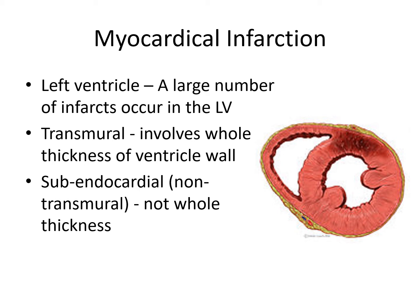In a transmural myocardial infarction, the necrotic tissue involves the whole thickness of the ventricular wall—in this case, the left ventricle, where most infarcts occur. A subendocardial MI would not go through the entire thickness of the ventricular wall.